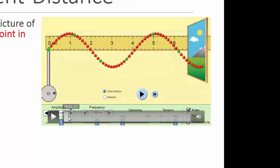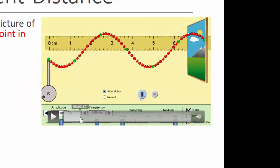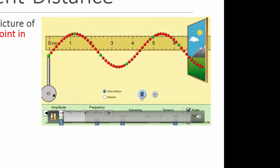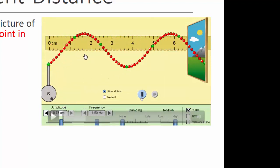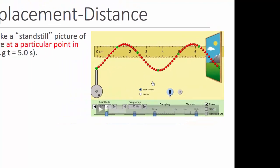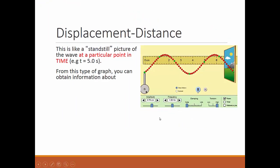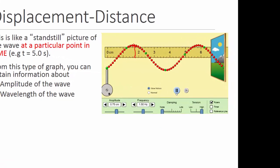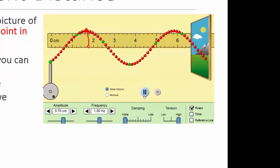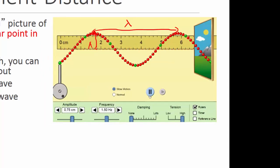So we fast forward to 5 seconds. At 5 seconds, this will be the displacement-distance graph. From this graph, we can obtain information about the amplitude of the wave — you can measure the amplitude from here to here. You can also find the wavelength of the wave, from peak to peak. So you can find both the amplitude and the wavelength.